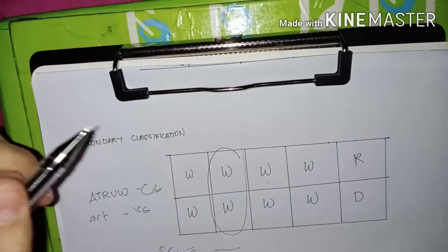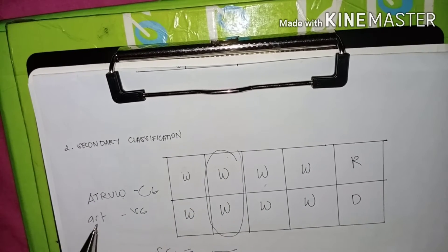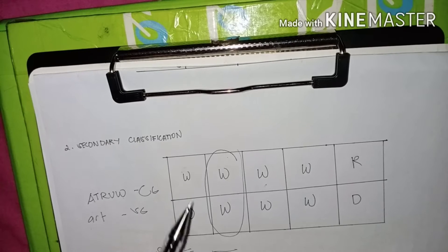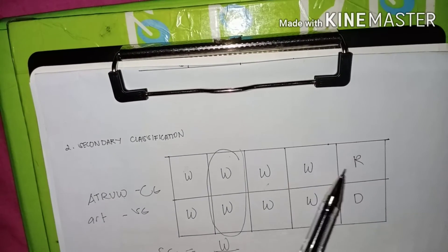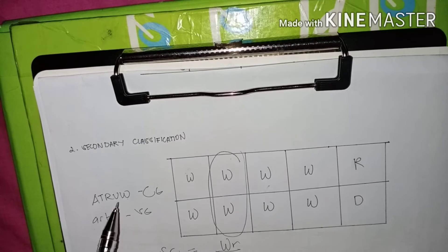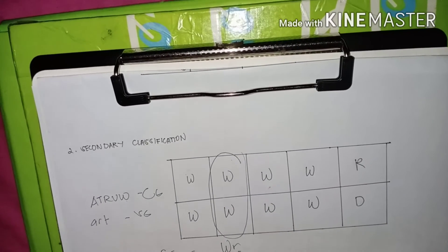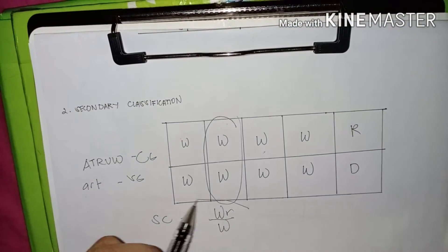In secondary classification, the index finger uses capital letters. If it's a whorl, it will be capital W. If it's not an R pattern, we leave it blank. The radial loop gets the letter R placed in its position. For the denominator, the left index finger is capital W. This is the answer to our secondary classification: capital W, small R, small W, over capital W, small W.